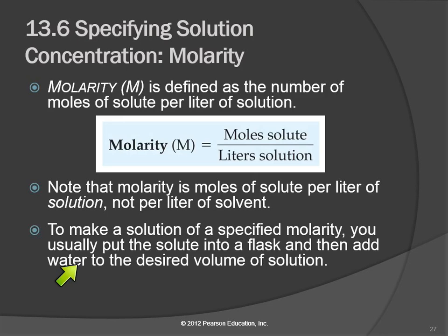When you make a solution of a specific molarity, the way you do it is you usually measure out the solute. You can weigh it in grams, so you have to figure out how many grams that number of moles weighs, and you weigh out that amount of solution. You put it in a flask, and then you add water until you get to the desired volume.